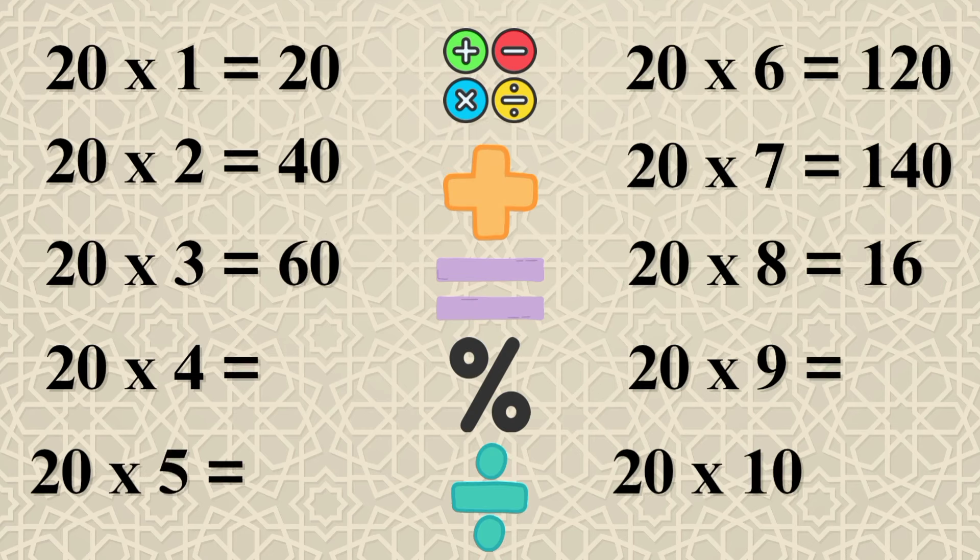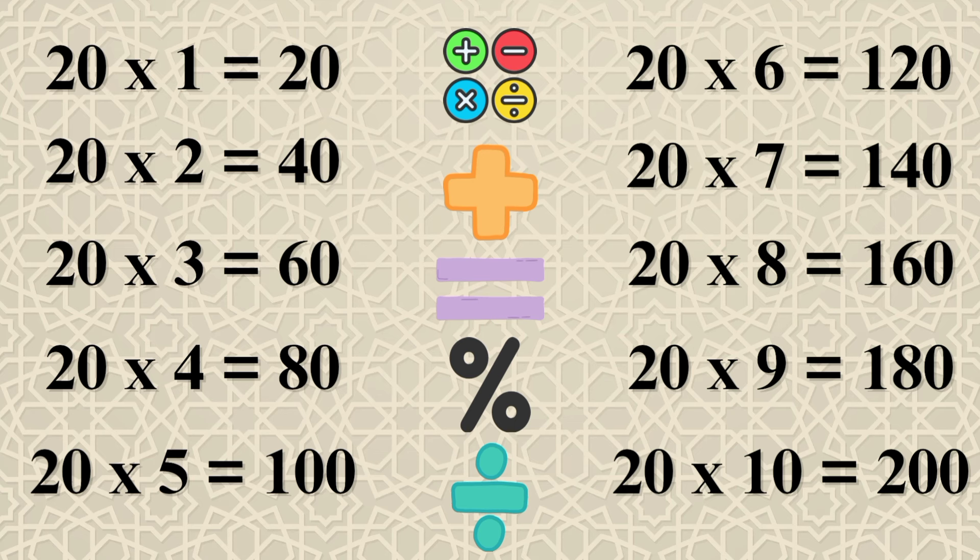20×1=20, 20×2=40, 20×3=60, 20×4=80, 20×5=100, 20×6=120, 20×7=140, 20×8=160, 20×9=180, 20×10=200.